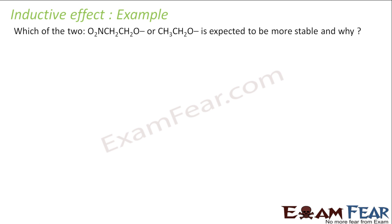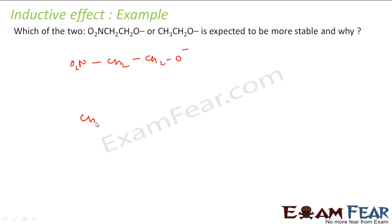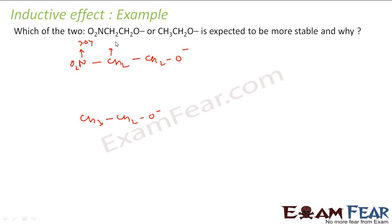Let's take one more example: which of the two is expected to be more stable? I have one molecule with an NO2 group connected through CH2-CH2-CH2-O minus, and another which is CH3-CH2-O minus. The electronegativity of nitrogen is 3.04 and carbon is 2.55, so both carbons in the chain are the same and we don't need to compare electronegativity there.